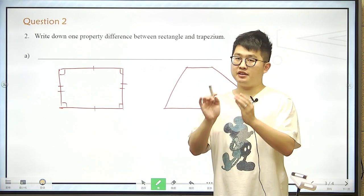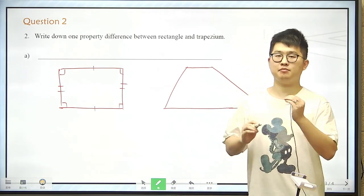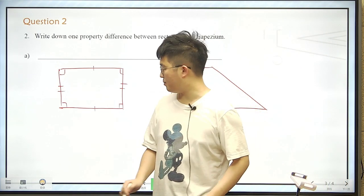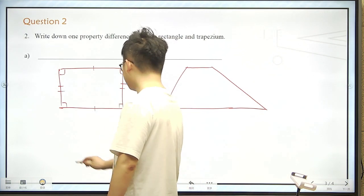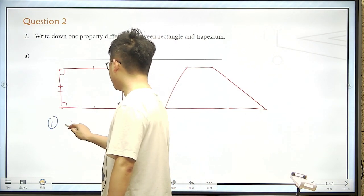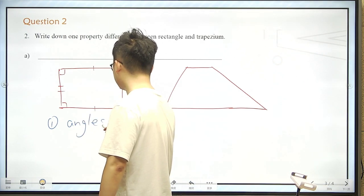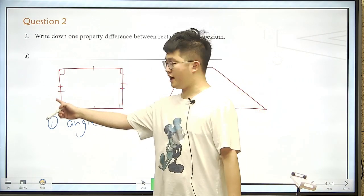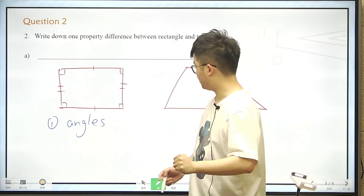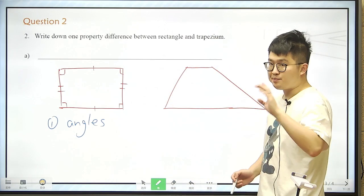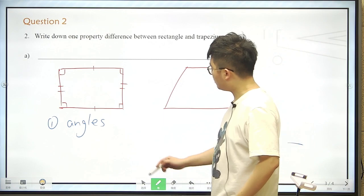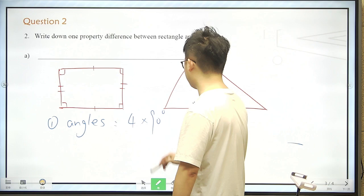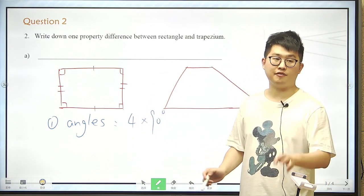So we just need to write down one property difference, but let me show you maybe two or three of them. The first one would be the angles. We know that a rectangle has four right angles. And trapezium, no. So the angles would be, in the rectangle there will be four right angles. I just write it down like this, there are four right angles.